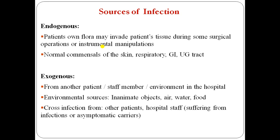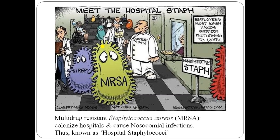In the hospital, if one patient has an infection, it can transmit to another patient. Cross infection can come from other patients in the hospital who are suffering from infectious disease or are asymptomatic carriers. For example, multi-drug resistant Staphylococcus aureus can colonize the hospital and cause nosocomial infection — this is known as hospital staphylococci.